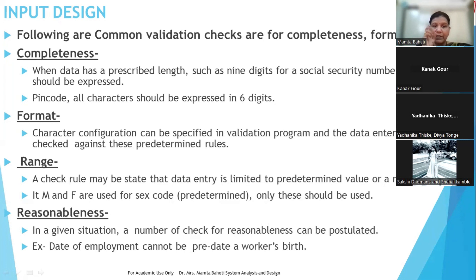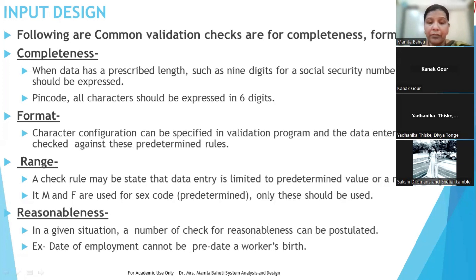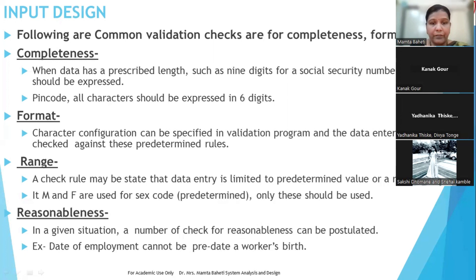There should also be logical reasonableness checks — for example, between date of employment and date of birth, date of birth should come first, followed by date of employment, meaning date of employment should be greater than date of birth. It should not be before the worker's birth date. Similarly, date of retirement should not be before the date of joining. These reasonableness constraints and checks need to be verified when designing the particular input — whether they are applied or not.